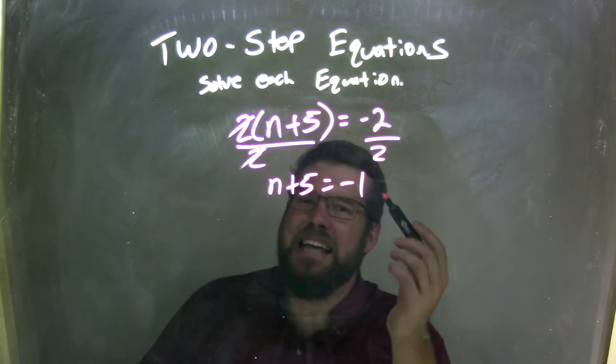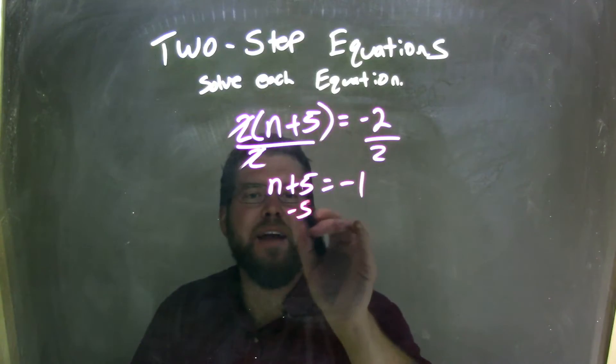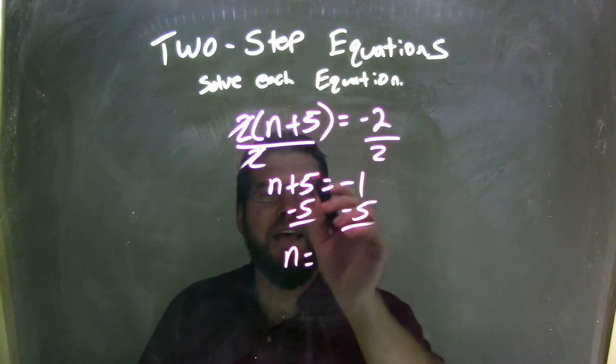So now I have n plus 5 equals negative 1. Well, opposite of addition is subtraction, so I subtract a 5 to both sides, and now I'm left with n equals, well, the 5's canceled.